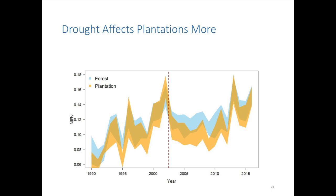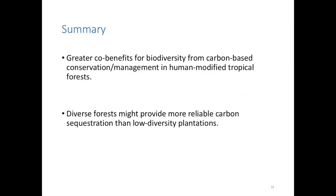This is a preliminary result we would want to substantiate with data from more sites and other plantation species. To summarize with two takeaway messages: first, there are opportunities for co-benefits when looking at tree diversity and carbon in tropical forests, but such opportunities are more likely to exist within human-modified forest landscapes rather than intact forests where tree diversity and carbon appear less closely correlated. Second, diverse forests might provide more reliable carbon sequestration benefits than low-diversity plantations, and this difference in quality may become more important given predictions of greater drought frequency in the tropics.